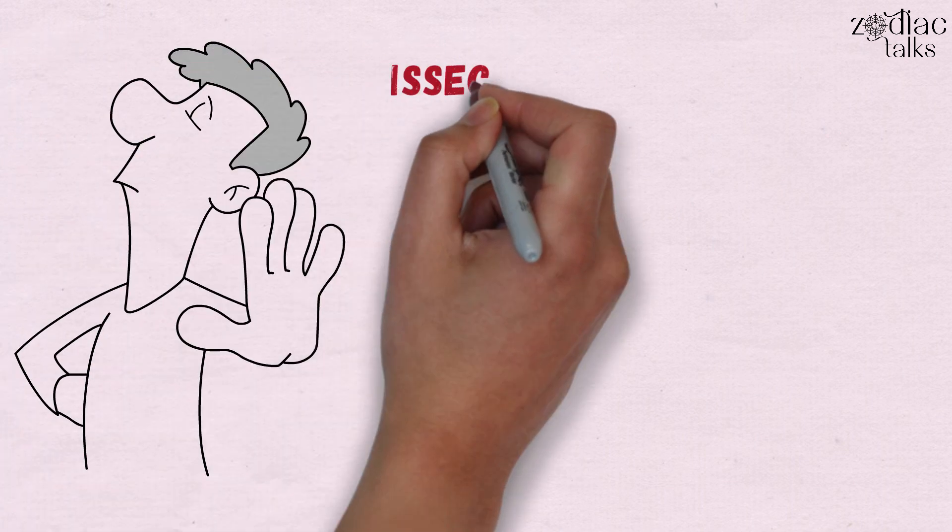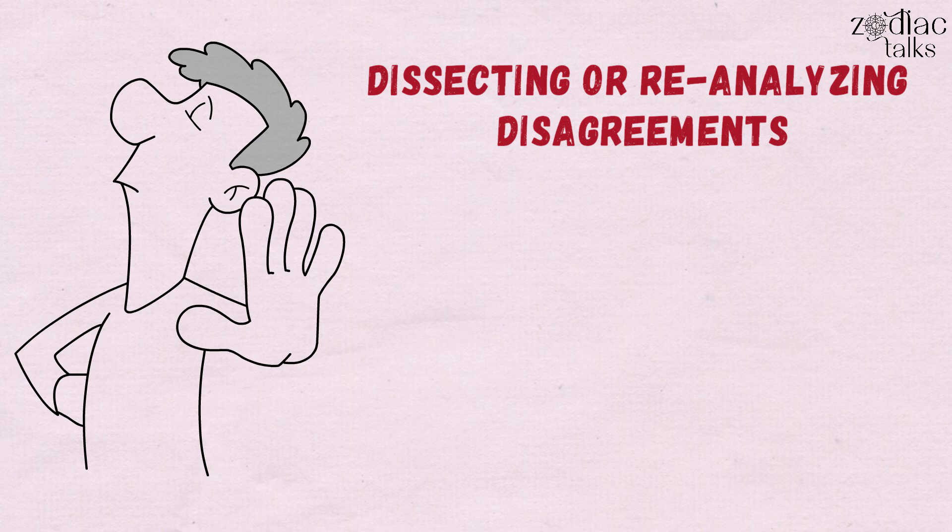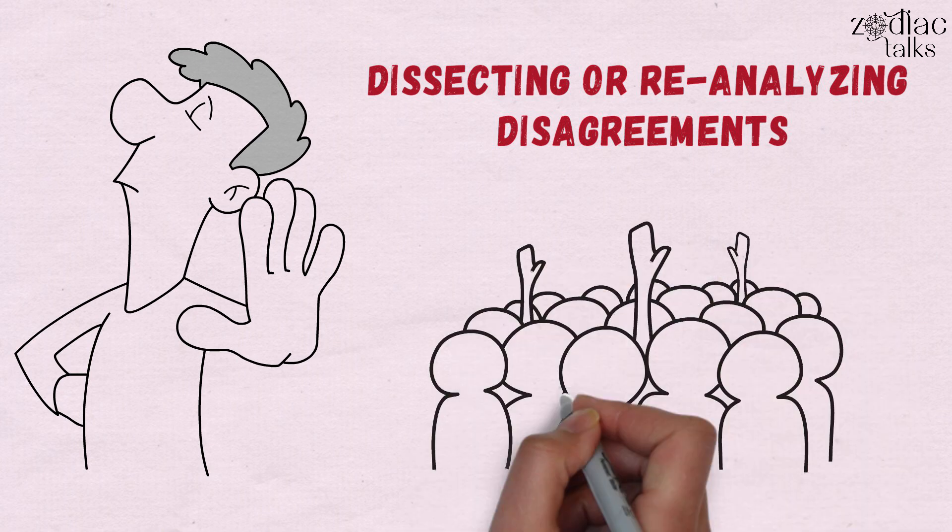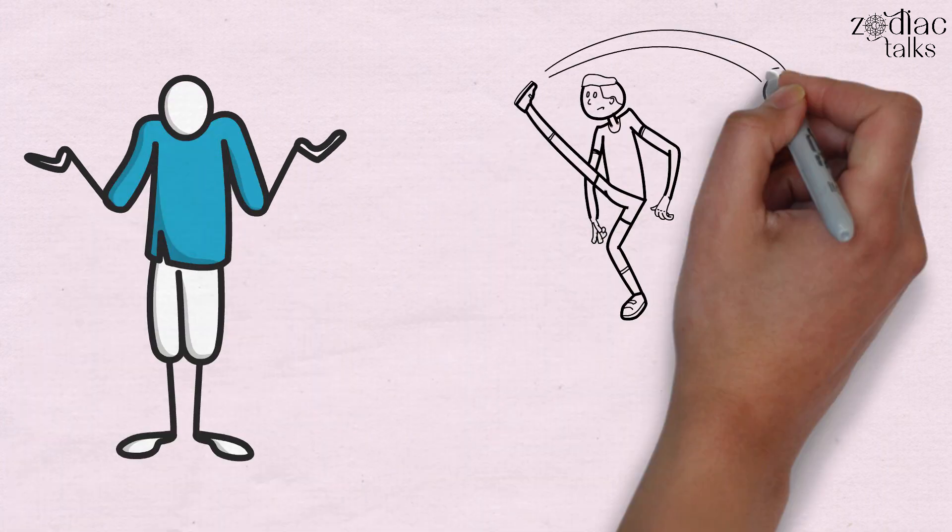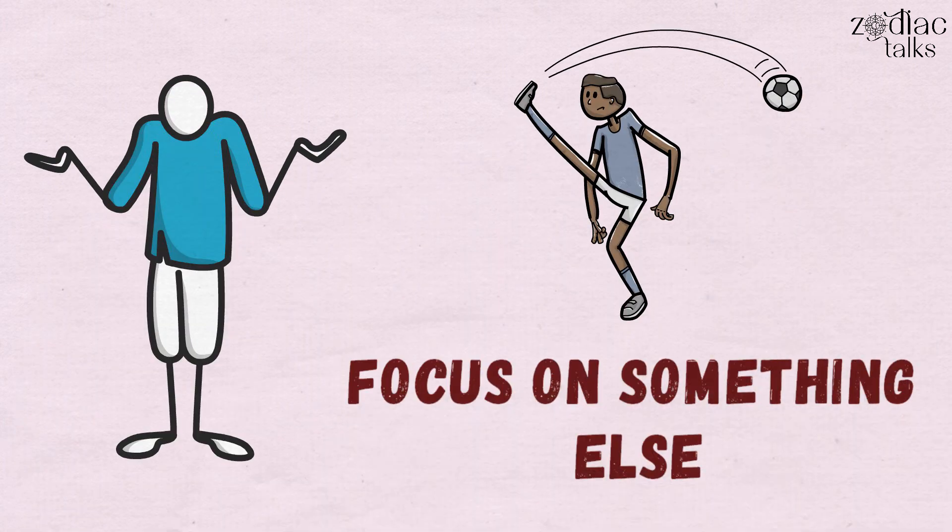They don't waste time dissecting or re-analyzing disagreements with friends or partners, or worrying about what other people think of them. It's simple for them to turn off the feeling, tuck it away, and focus on something else if they become emotional.